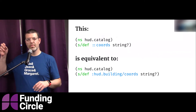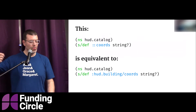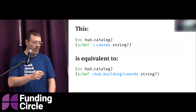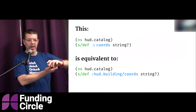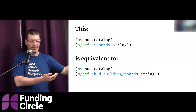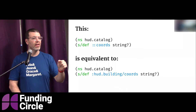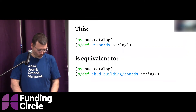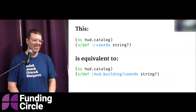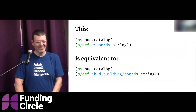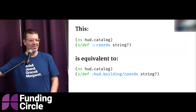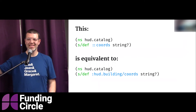So if we're in namespace hud.catalog, defining a spec with double colons just expands out to the fully qualified name. The top example with double colons and the bottom with explicit namespace are completely equivalent — it's just syntactic sugar. It might seem simple, but I got tripped up on this. Double colons are handy — you don't have to type the redundant namespace prefix in your file. It's concise and super convenient. Except when it's not.